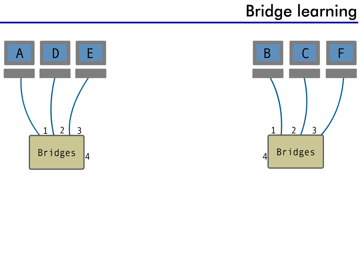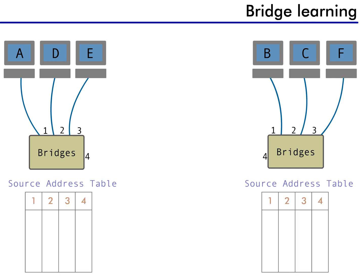When we first turn the bridges on, all source address tables are empty. Typically, once a network device is turned on, it's never turned off. So, in most networks, the empty table only occurs when a device is powered on.